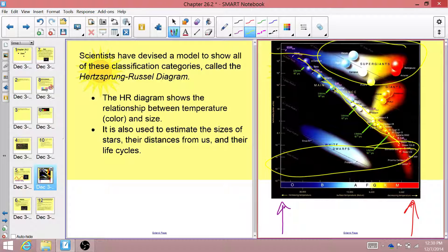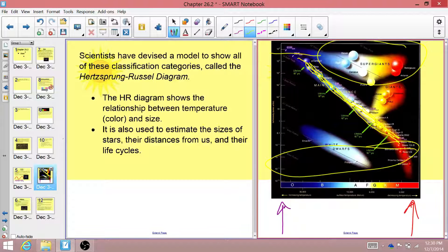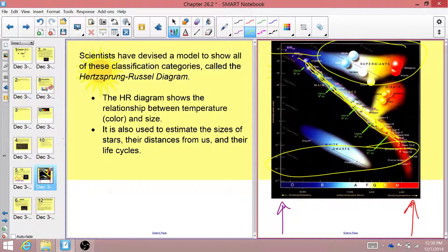And all of the stars that fall on that line are considered main sequence stars. And that means they're following the normal evolution of a star and the normal life cycle of a star.